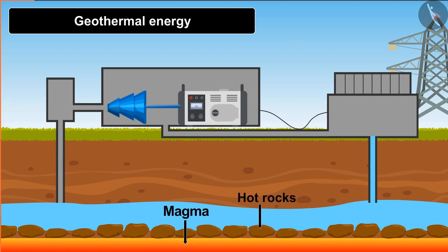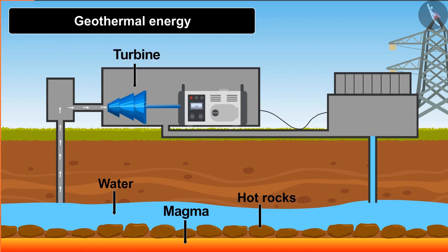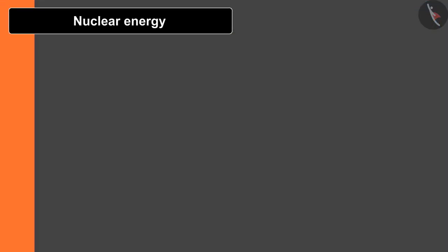When groundwater comes in contact with these hot rocks, it converts into steam and starts moving towards the earth's surface. When it reaches the surface, it is pumped out in the form of boiling water or steam. The steam is passed through a pipe to rotate the blades of the turbine, and with the help of a generator the mechanical energy of the turbine is converted into electrical energy. The last source of energy is nuclear energy, which is of two types: nuclear fission and nuclear fusion.